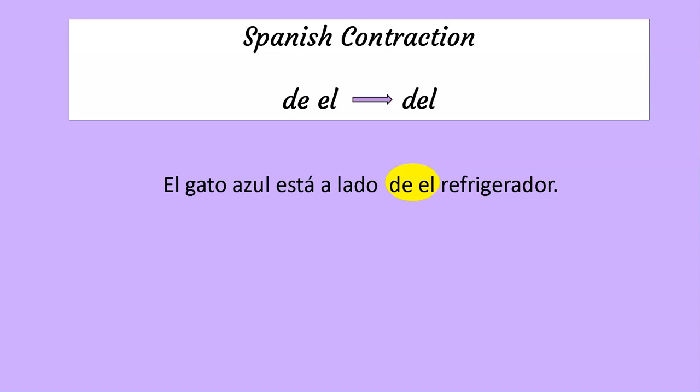If the preposition de is next to the article el, you have to make the contraction del. So the sentence will go like this: El gato azul está al lado del refrigerador. This sentence is incorrect. This sentence is correct.